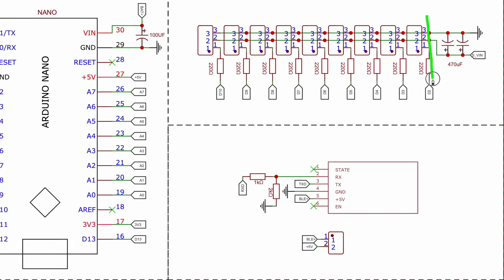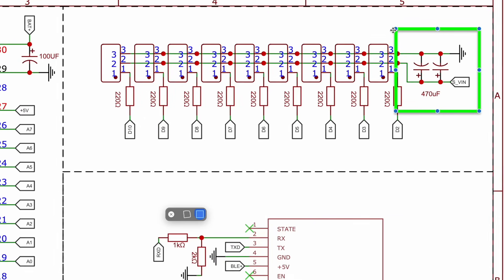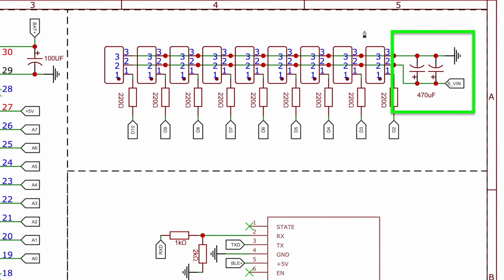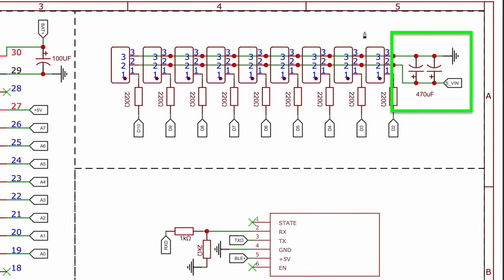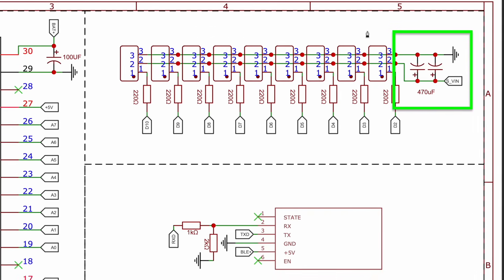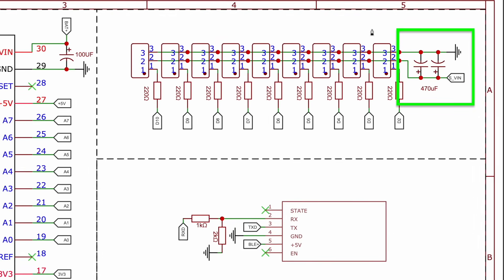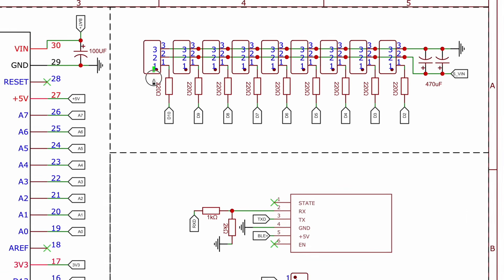I have also added two capacitors to the circuit. Servo motors can require large amounts of current during sudden movements. Capacitors can be used to meet such sudden power demands and stabilize the power supply and also help to reduce power supply fluctuations.